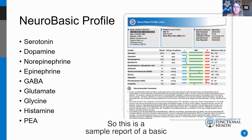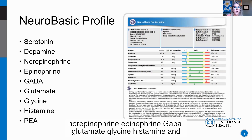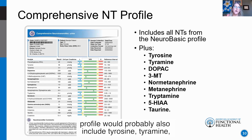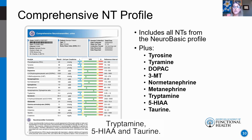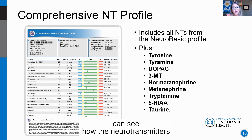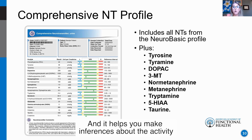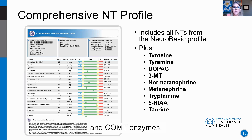Here is a sample report of a basic neurotransmitter profile. What's tested includes serotonin, dopamine, norepinephrine, epinephrine, GABA, glutamate, glycine, histamine, and PEA (phenethylamine). A more comprehensive profile would also include tyrosine, tyramine, DOPAC, 3-MT, metanephrine, tryptamine, 5-HIAA, and taurine. These additional values are largely metabolites so you can see how neurotransmitters are being metabolized, helping you make inferences about the MAO and COMT enzymes.